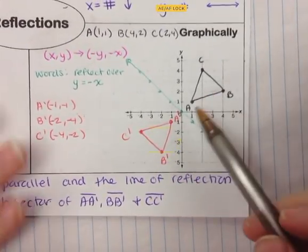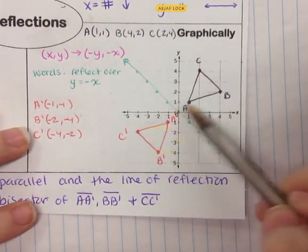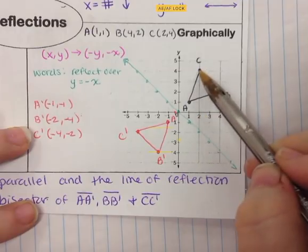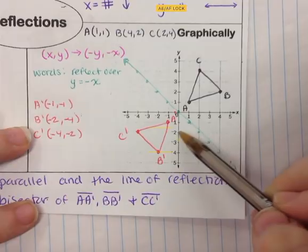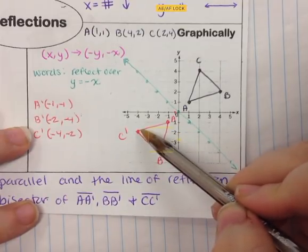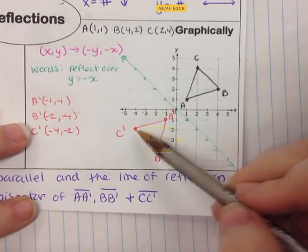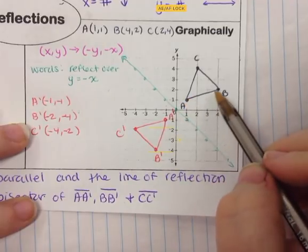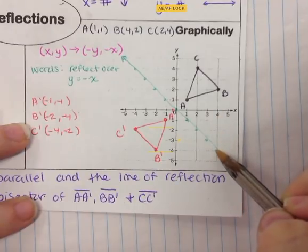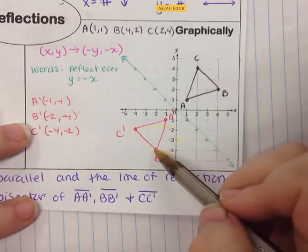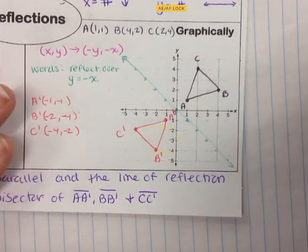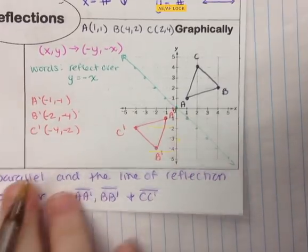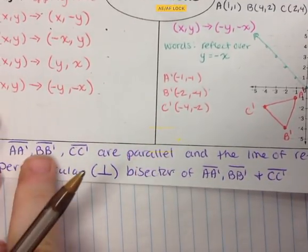Connecting C to C', A to A', and B to B': from C to C' we go down 6, left 6 — slope is -6 over -6 which is positive 1. From A to A' it's down 2, left 2 — also positive 1. From B to B' it's down 6, left 6 — also positive 1. So all three segments are parallel with slope positive 1.